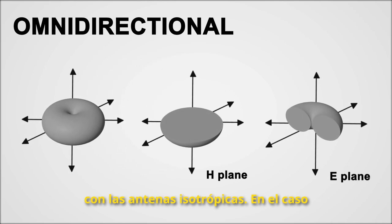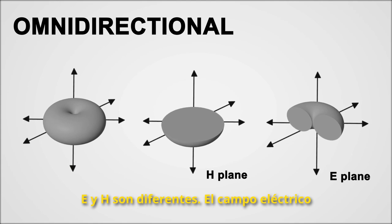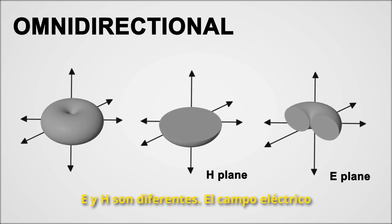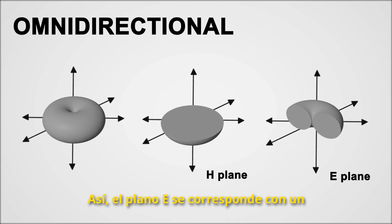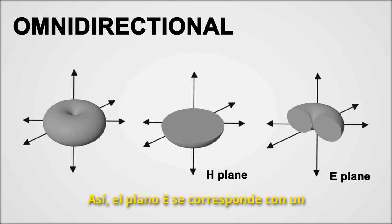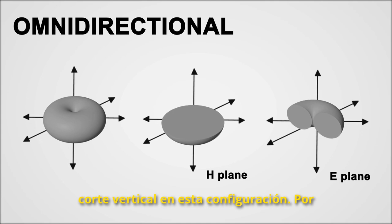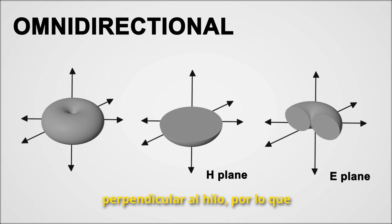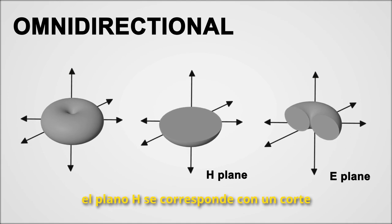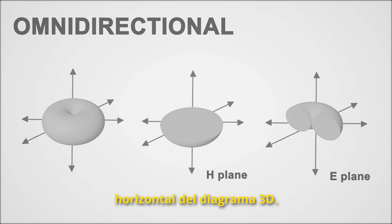In the case of omnidirectional antennas, the E and H planes are different. The electric field is oriented parallel to the wire antenna. Thus, the E plane corresponds to the vertical plane in this configuration. On the other hand, the magnetic field is perpendicular to the wire, so the H plane corresponds to a horizontal cut of the three-dimensional pattern.